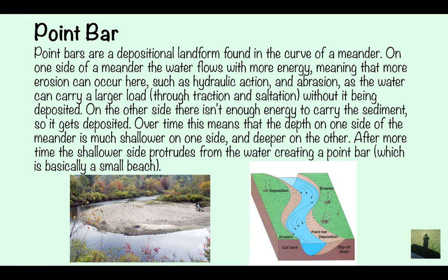Point bar. Point bars are depositional landforms which are found on the curve of a meander. On one side of a meander, the water flows with more energy, meaning that more erosion can occur here, such as hydraulic action and abrasion, as the water can carry a larger load through traction and saltation without it being deposited. On the other side, there isn't enough energy to carry the sediment, so it gets deposited. Over time, the depth on one side of the meander becomes much shallower than the other. After more time, the shallower side protrudes from the water, creating a point bar, which is basically like a little beach. Here's a photograph of the point bar and a diagram showing what's happened — the faster flowing water comes here so the sediment can be transported, but on this side there's not enough energy, so it gets deposited and creates a point bar.